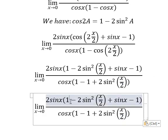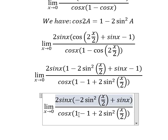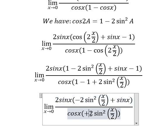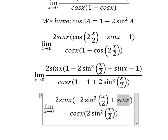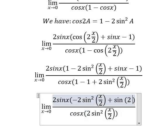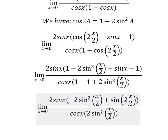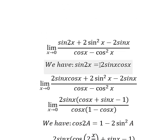1 minus 1 equals 0. 1 minus 1 equals 0. That is about sin(x), which equals sin(2 multiplied by x/2), so we need to change the form of this one and transform it accordingly.